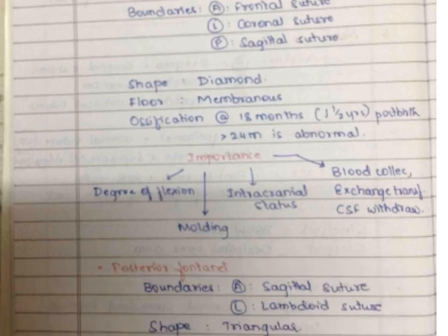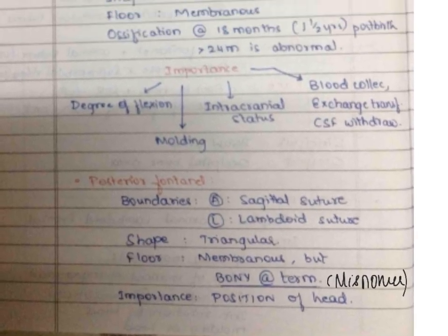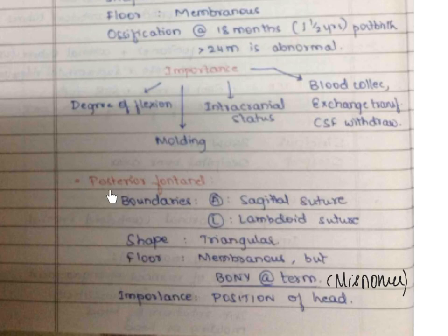The posterior fontanel is bounded anteriorly by the sagittal suture and laterally by the lambdoid sutures. Its shape is triangular and the floor is membranous, but by the time of term pregnancy it becomes a bony structure, so calling it a fontanel is a misnomer. Its importance is that it helps in determining the position of the head in relation to the maternal pelvis.